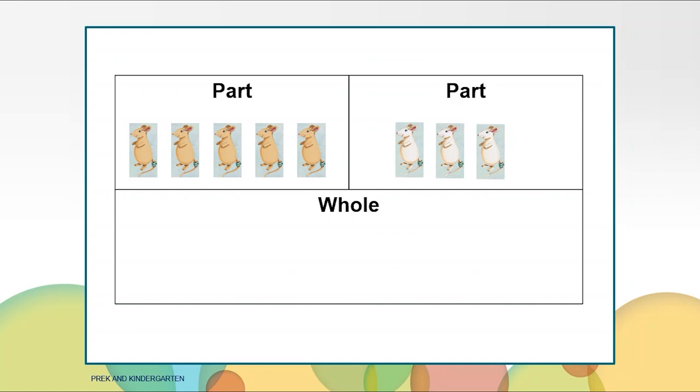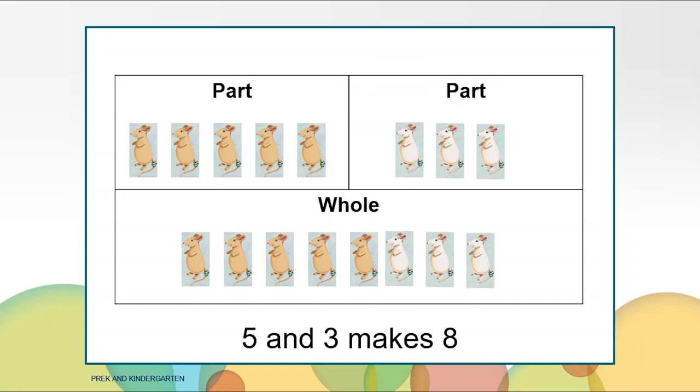In order to figure out what the whole is, we need to put the two parts together. Let's do that now. Great! We put eight mice in the whole box. Five and three makes eight.